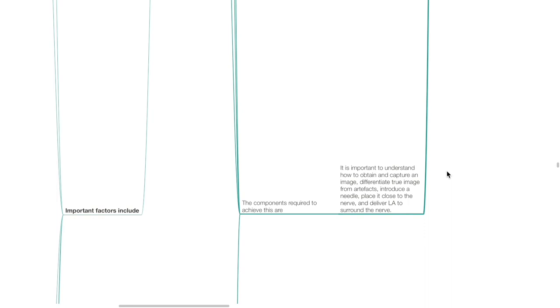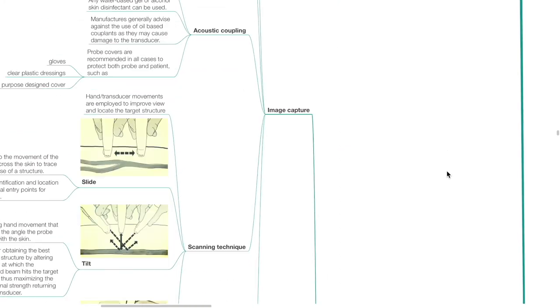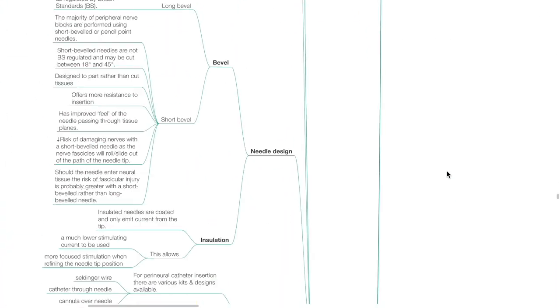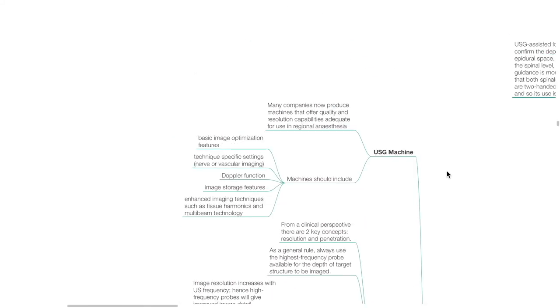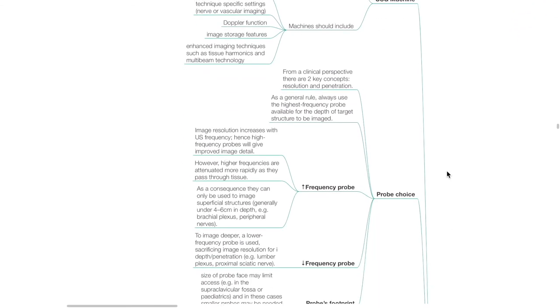The components required to perform ultrasound-guided regional anesthesia are image capture, image optimization, image interpretation, and needling techniques. Many companies now produce ultrasound machines offering quality and resolution adequate for use in regional anesthesia. Ultrasound machines should include basic image optimization features, technique-specific settings for nerve or vascular imaging, Doppler function, image storage features, and enhanced imaging techniques such as tissue harmonics and multi-beam technology. From a clinical perspective, there are two key concepts: resolution and penetration.